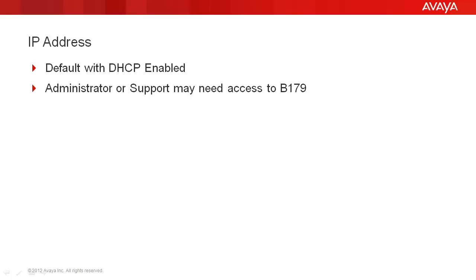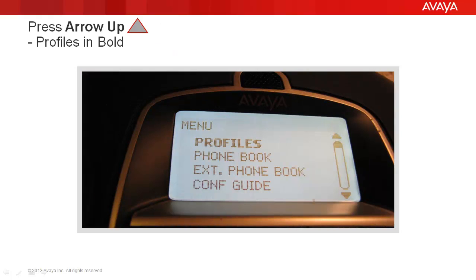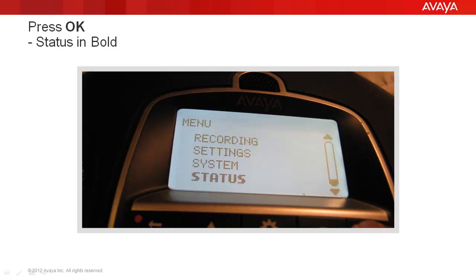So now we're going to go through how you find it via the phone. As you can see, the phone is up and running. The first thing we're going to do is press the menu button, which is in the center. That brings us to a page where Profiles is in bold. We're going to press the arrow up key, which will wrap it around, and that brings us to Status in bold. We're going to press the OK button on the far right.